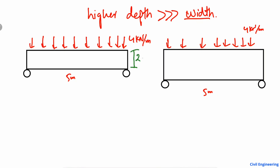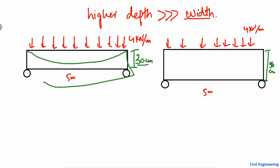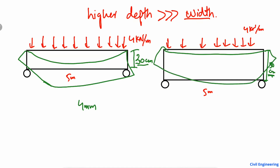This beam has a lower depth — for example, a depth of 30 cm — and this beam has a depth of 50 cm. If I keep their widths the same, the lower-depth beam will show a higher deflection. For example, it may show 4 mm of deflection, while the 50 cm deep beam will show only about 2 mm or 1.5 mm deflection.